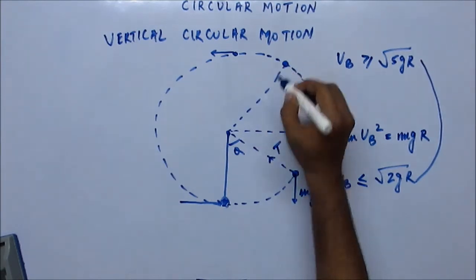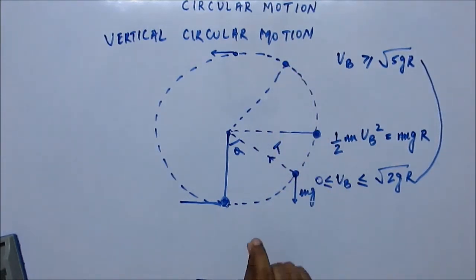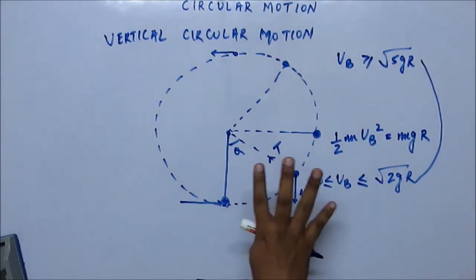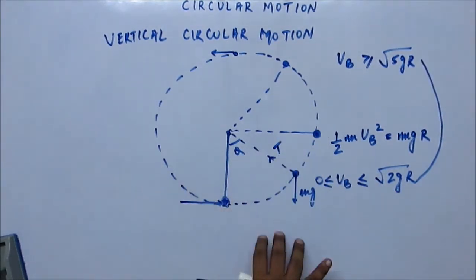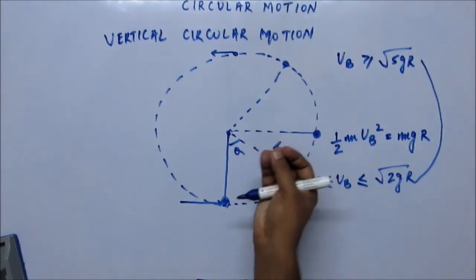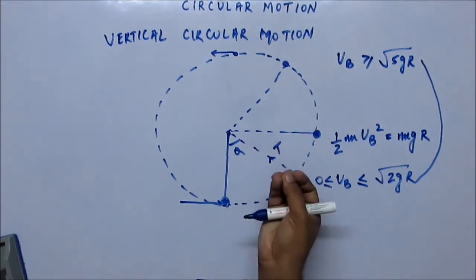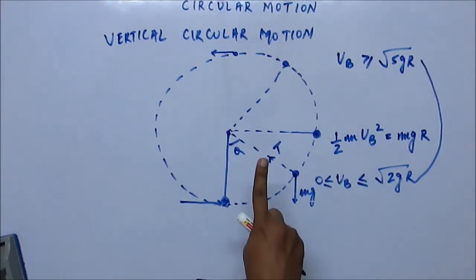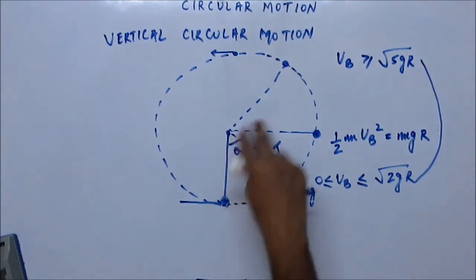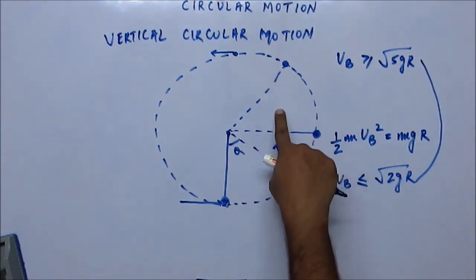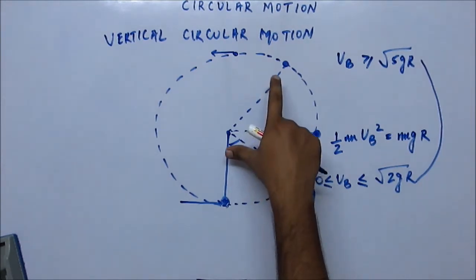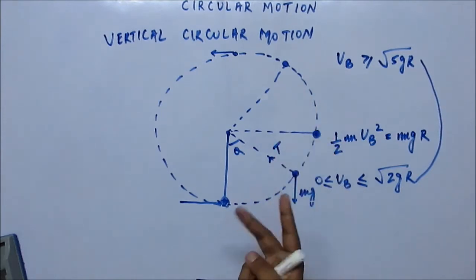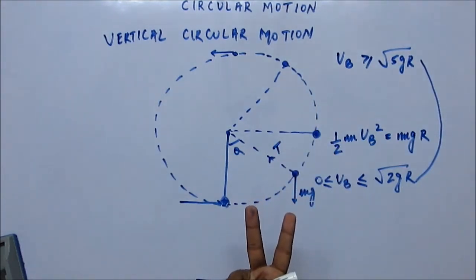At this intermediate point, if tension becomes zero and velocity does not become zero, the bob will come out of the circular path — because if tension is zero the bob is no longer attached to the string yet still has velocity, so it follows a different path. However, if velocity becomes zero and tension does not become zero, the bob cannot leave the circular path since tension still acts on it — it will go up and come back down, doing oscillatory motion. There are two situations; let's examine them one by one.